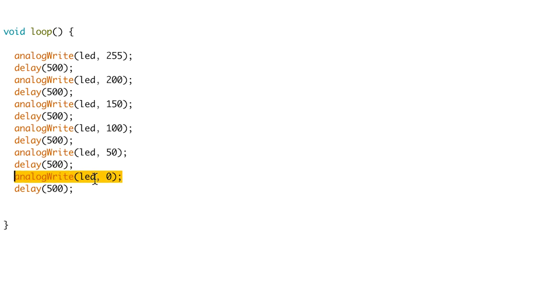And so, this analog write right at the end would be exactly the same as saying, digital write, LED low. In the same way, this analog write at the top would be exactly the same as saying, digital write, LED high. All the analog writes in between are just writing voltages between zero and five volts.